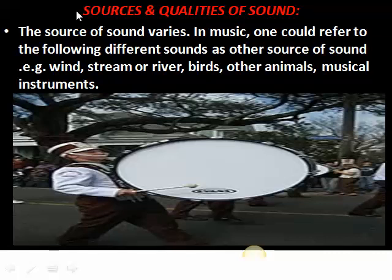Sources and qualities of sound. Talking about sources of sound, we want to know how sounds are produced and all things that produce sound. Animate objects produce sound and inanimate objects also produce sound. Animate objects are living things — things that can talk and move. Inanimate objects are also called non-living things. They can't talk and they don't have life in them, but they can produce sound. So the two major sources of sound are sounds produced by animate objects and sounds produced by inanimate things.